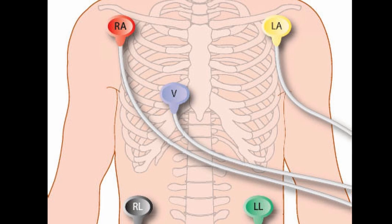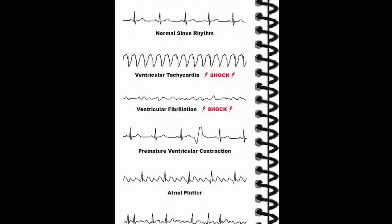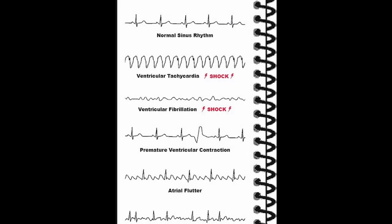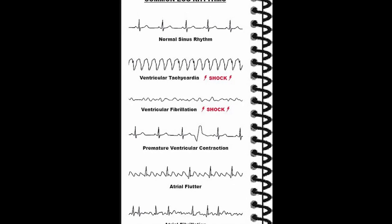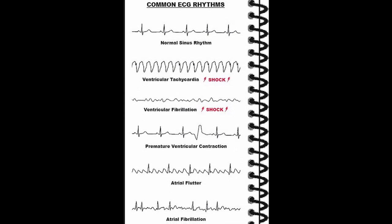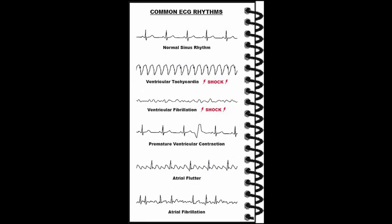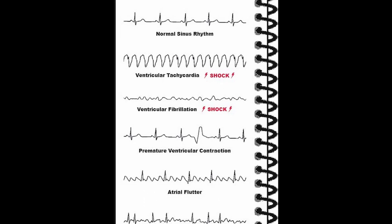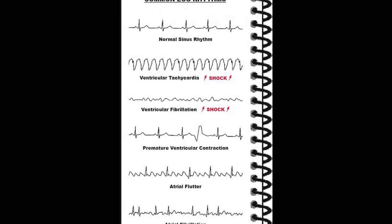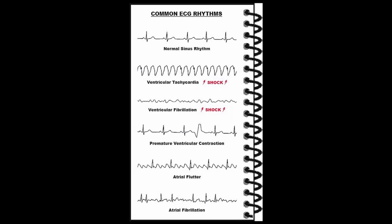The nurse should have basic ECG interpretation skills so they can identify the rhythm and respond accordingly. For example, if the patient develops VTac, VF, or asystole, they have to identify that rhythm and respond according to it.